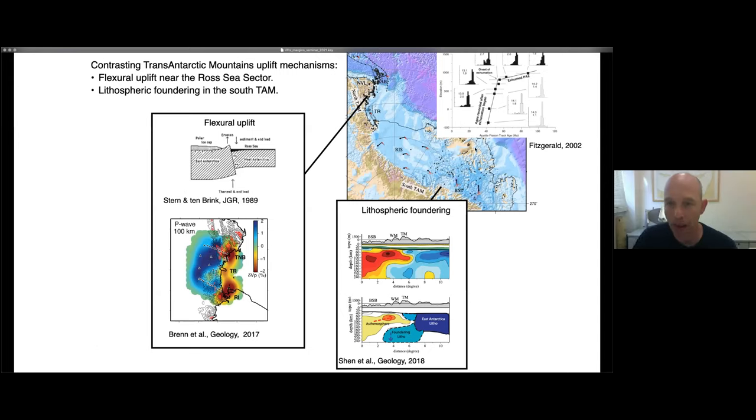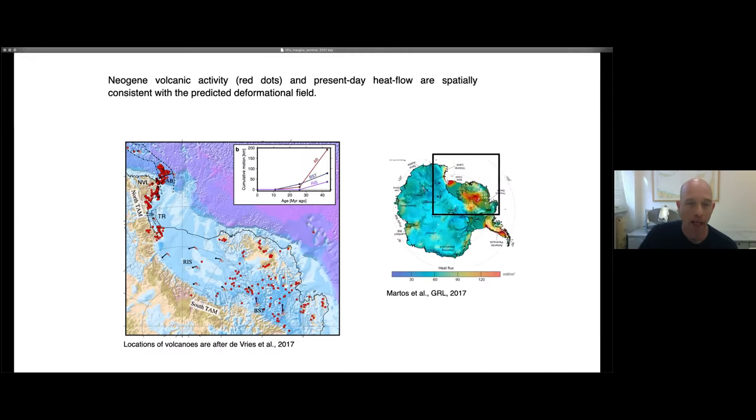We know that during rifting, the Trans-Antarctic Mountain has been uplifted. You can see that in the fission track data and the mechanism that was suggested for the uplift of the Trans-Antarctic Mountain on one side was flexural uplift. While on the other side, it seems that different process, different mechanism has been taking place that uplifted Trans-Antarctic Mountains there, which involved lithospheric foundering, which also might be related, might be influenced by the convergence motion there.